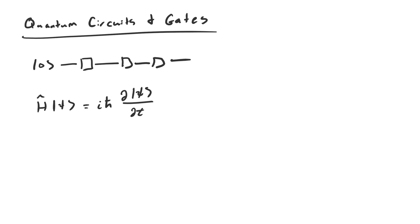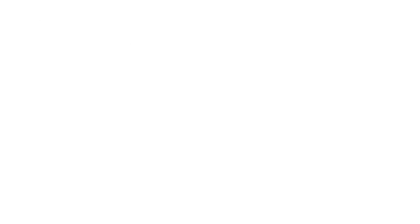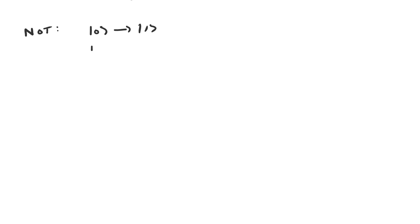Let's take a look at some specific quantum gates to get a better handle of this model. One of the simplest gates is the NOT gate. It acts on a single qubit, and it turns the state |0⟩ into the state |1⟩ and the state |1⟩ into the state |0⟩. This is why it's called a NOT gate. It's usually represented either as crosshairs, or as just an X for the Pauli-X operator.